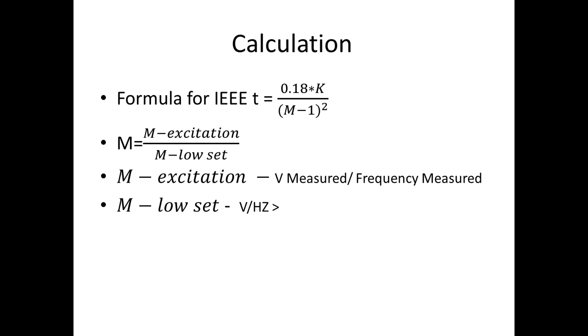Now let us consider the PT secondary rated voltage is 110 volt and rated frequency is 50 hertz. So the flux is equal to V/f. When you calculate for this, 110 divided by 50, we get 2.2.